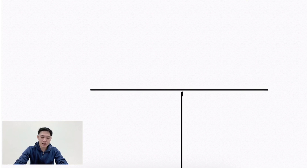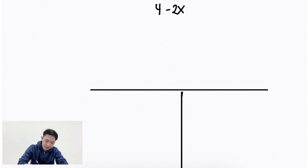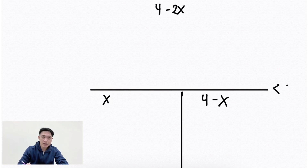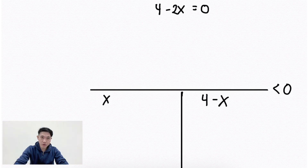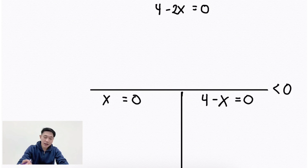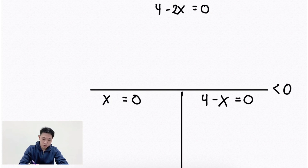The computed rational inequality is 4 minus 2x all over x times the quantity of 4 minus x, less than 0. Let's proceed in finding the critical values by equating the numerator and denominator to 0. The numerator is 4 minus 2x — equate to 0. The denominator x alone — equate to 0. Then 4 minus x — equate to 0.